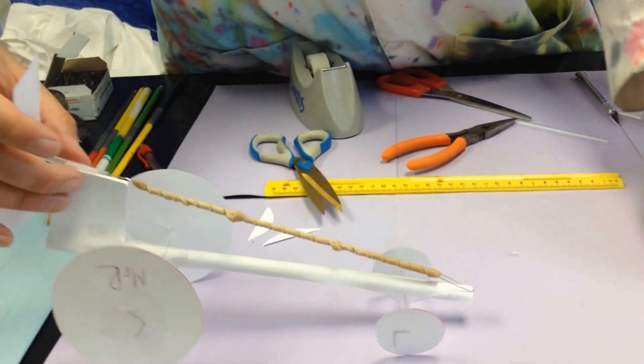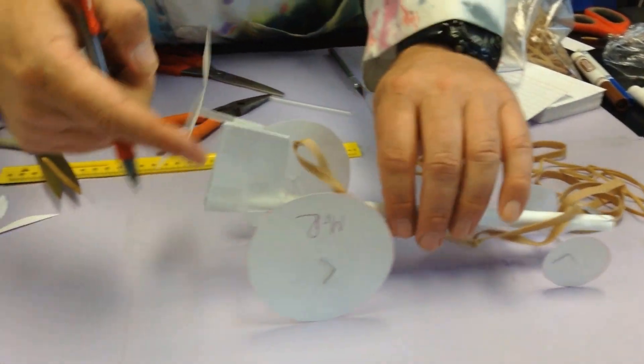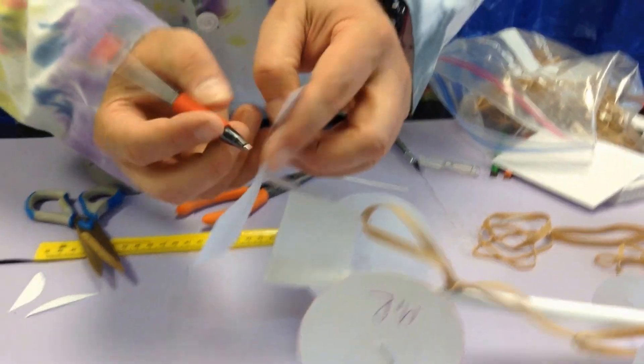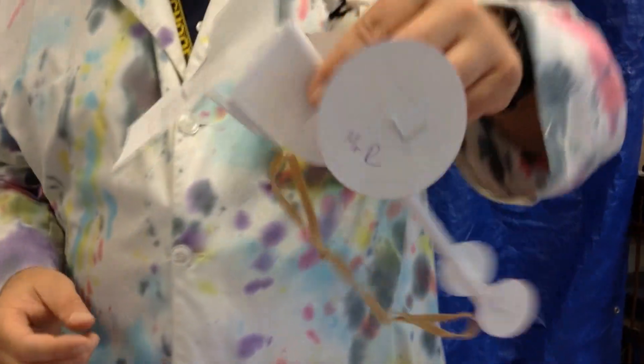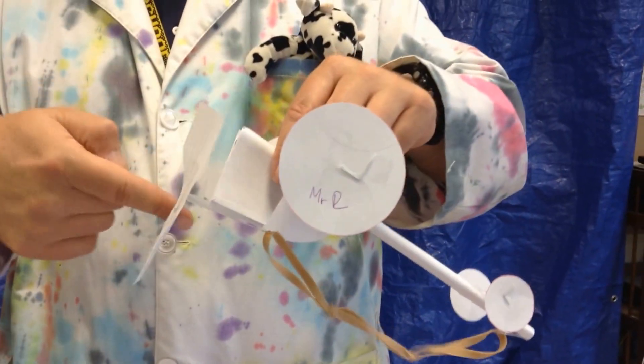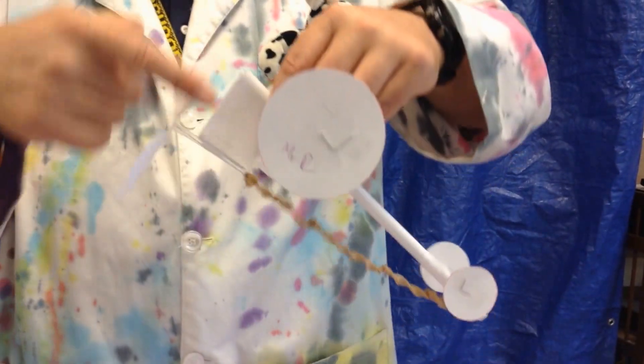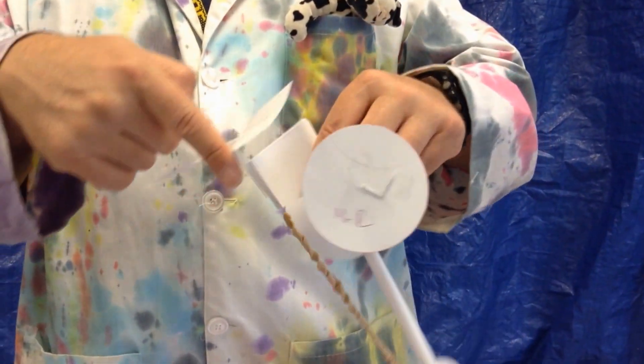So what I like to do, just to remind myself, is draw an arrow to show me which way to spin it. When I wind it, I like to hold it like this because that supports the motor mount - it's going to collapse if you do it too much. Then I like to hold it upside down like this because the rubber bands are less likely to tangle up.